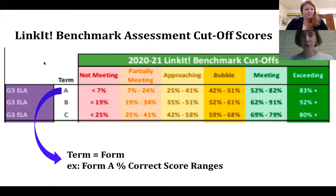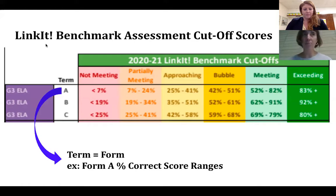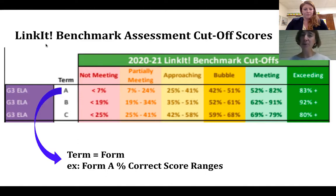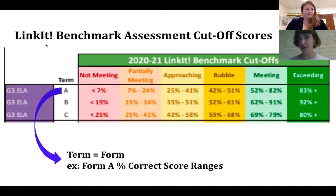These percentages come from analyzing tons of student performance data. What they're saying is that students who scored an 83% in September were likely, by the end of the year, to be exceeding standards on NJSLA. By Form C, students who scored an 80% were predicted to score exceeding on NJSLA. So these percentages going up and then down simply has to do with how overall Linkit performance correlates to actual performance on NJSLA.